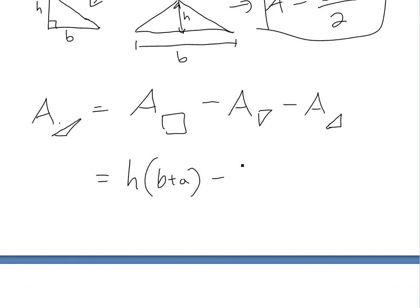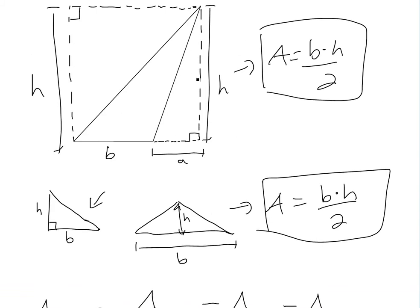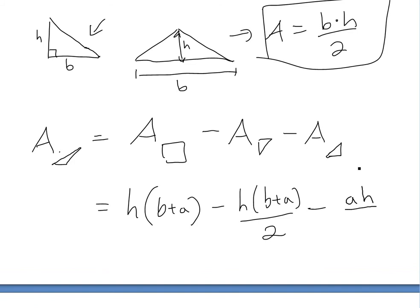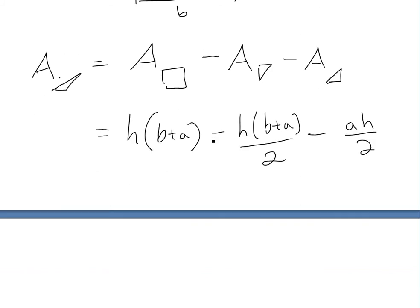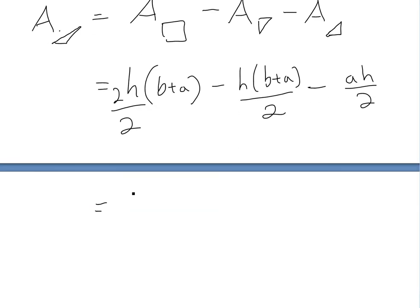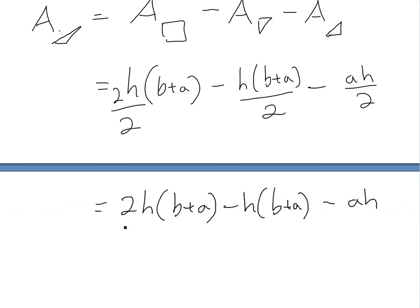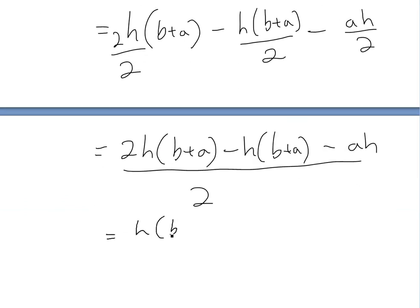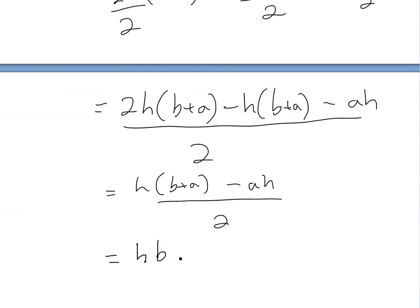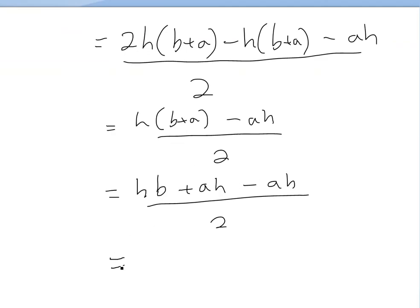In this case the base is h and this is (b plus a) over two. Then we subtract the other right-angle triangle, which is a times h divided by two — a is the base and h is the height. So now if we simplify — multiplying top and bottom by two to get a common denominator — we get: 2h(b plus a) minus h(b plus a) minus ah, all over two. This simplifies to h(b plus a) minus ah over two. Expanding: hb plus ah minus ah over two. The ah terms cancel, and we're left with hb over two.